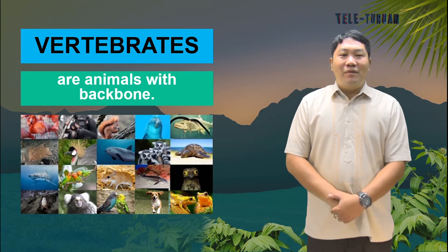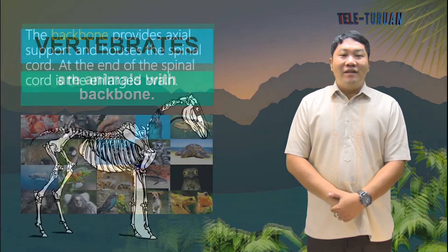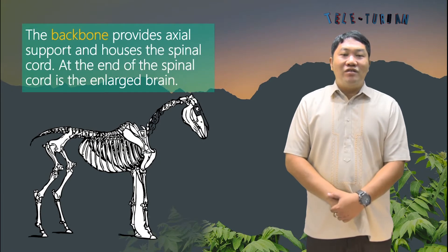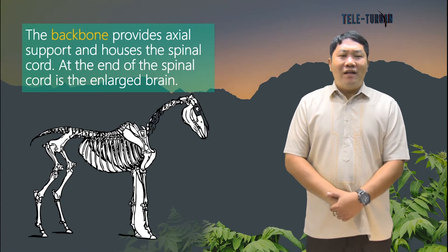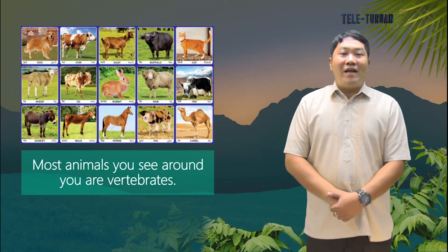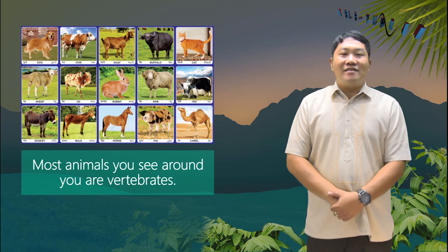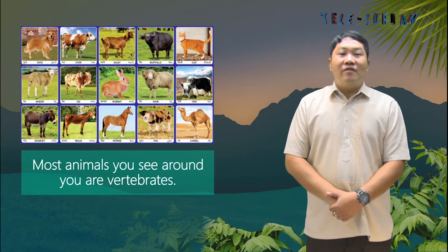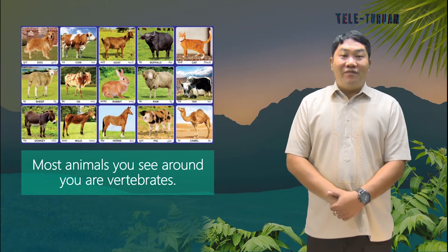The presence of the backbone is the common characteristic among vertebrates. The backbone provides axial support and houses the spinal cord. At the end of the spinal cord is the enlarged brain. Most animals you see around you are vertebrates — birds, cats, dogs, cows, lizards, frogs, and many more. Even humans are vertebrates.